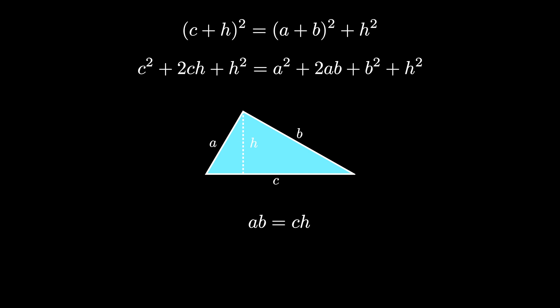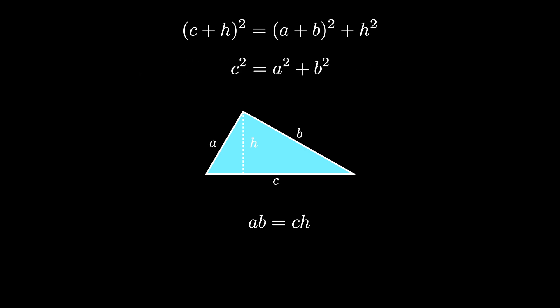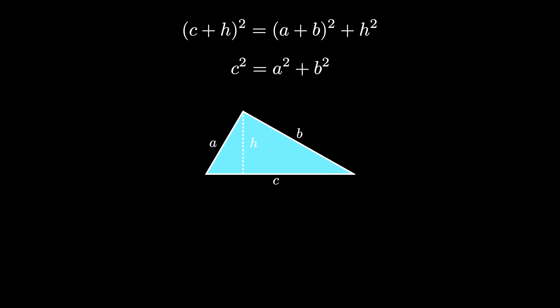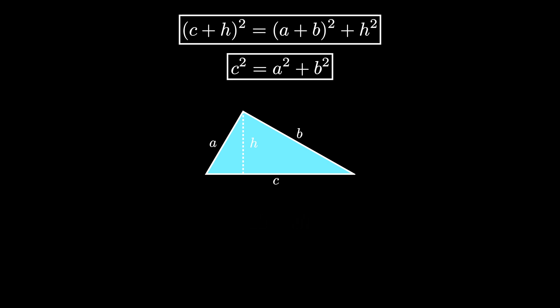Therefore in the equation the 2 times C times H cancels with the 2 times A times B, and the H squared terms cancel from both sides, resulting in the equation C squared equals A squared plus B squared. This latter formula is known as the Pythagorean theorem.